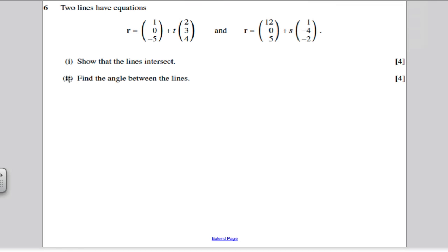Moving on to part 2 of the same question, we want to find the angle between the lines. Now, to make matters easier, let A be the vector 2, 3, 4, that's the direction vector of line R1. And I'm going to let B be the direction vector of R2, which is 1 minus 4 minus 2.